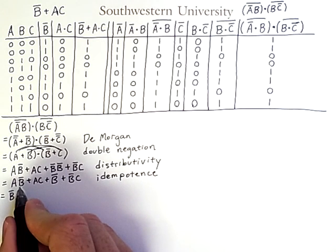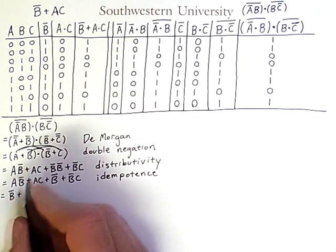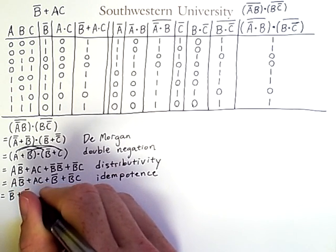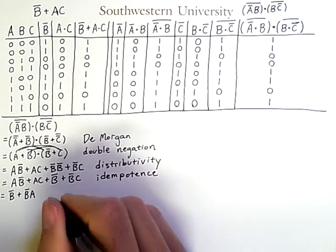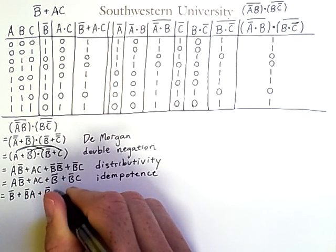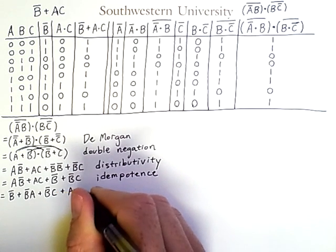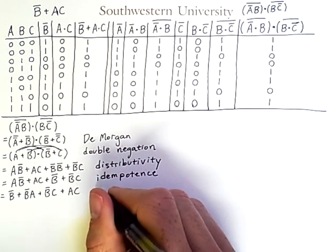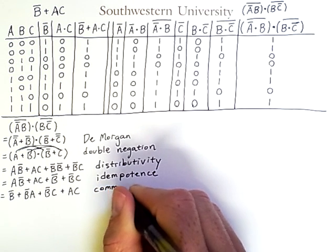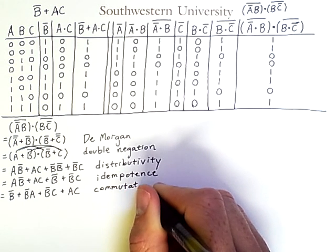Then, I can also flip the order of the individual terms here. So, I can have not-B and A. And here, I have not-B and C. And then, finally, A, C. This is simply multiple applications of commutativity.